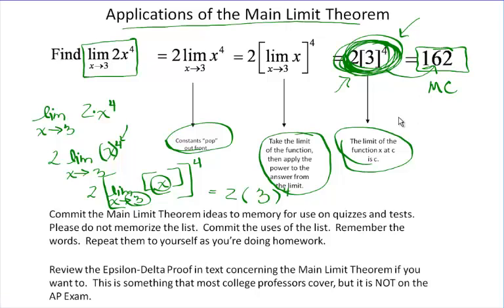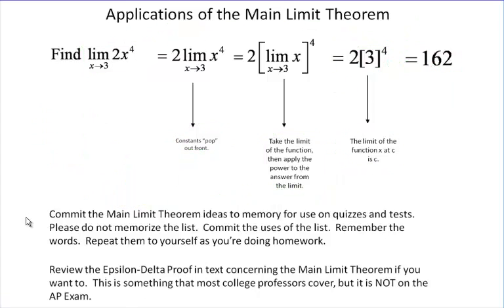So even though on free response you never have to simplify and I don't want you to simplify, you do need to be able to do the algebra because you're going to get the simplified form of the answer on your multiple choice part of your test. You are to commit all of the pieces of the main limit theorem to your memory. You must be able to pull all of those nine pieces of the main limit theorem out of your brain and use them on quizzes and exams.